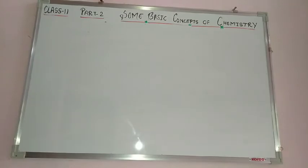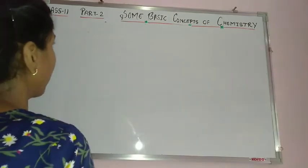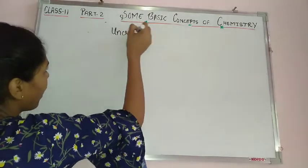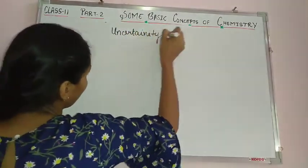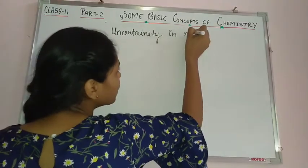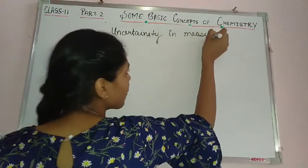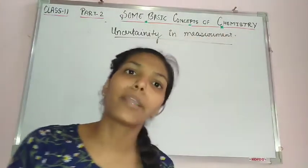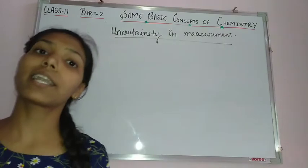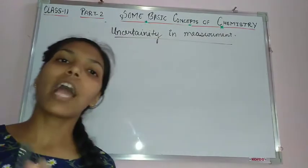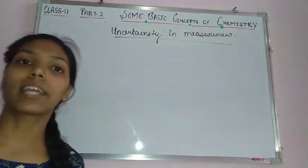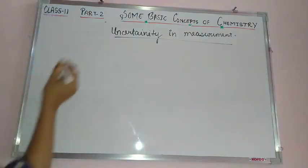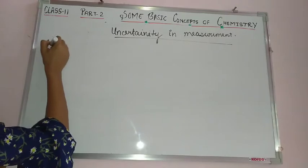The next topic according to NCERT is uncertainty in measurement. When we do a measurement — whether very small or very large — there can be uncertainty involved. This leads us to the topic of scientific notation.